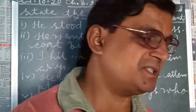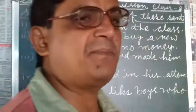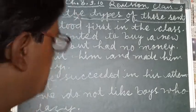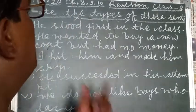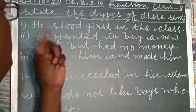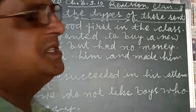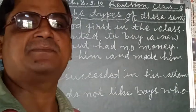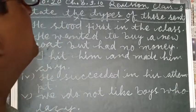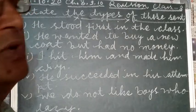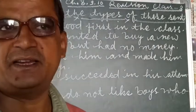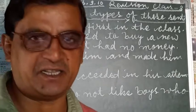Students, here there are some examples given at the board. I would like to tell you what type of sentences these are. Number one is: state the types of these sentences — means what kind of sentences are written there at the board. We have to find and underline them.